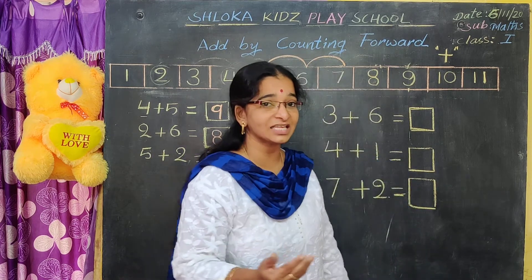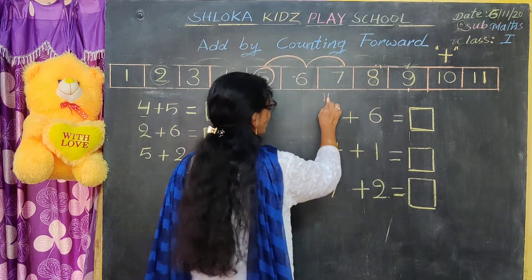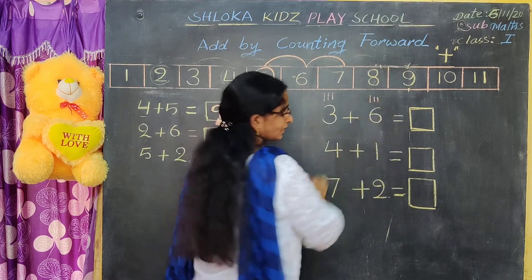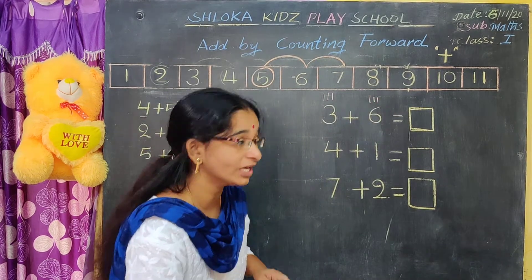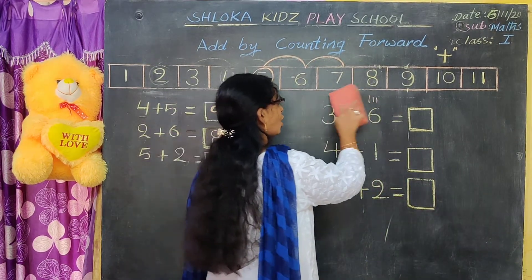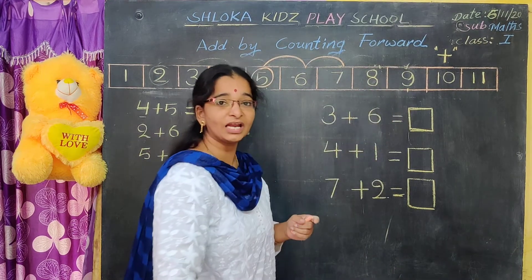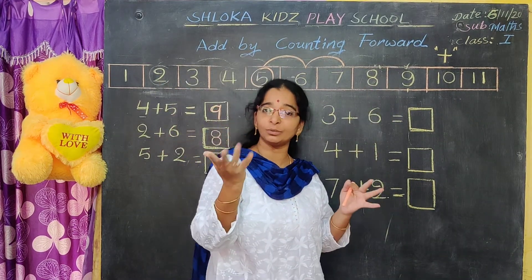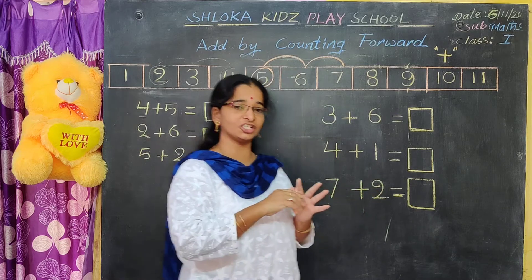When you are in UKG class you draw the lines like this: one, two, three. But now you are in first class. First class children should not draw the lines. You have to keep the figure in the mind and count on the fingers.